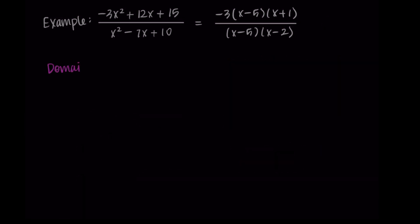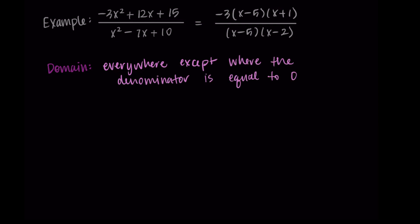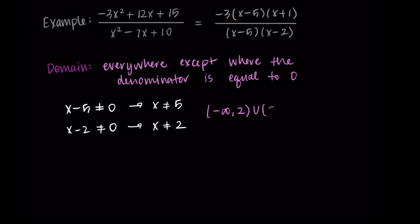Lastly, we do the domain — everywhere except where the denominator is equal to 0, which are the holes and the vertical asymptotes. Looking at the terms x minus 5 and x minus 2 in the denominator, we need x is not equal to 5 and x is not equal to 2. Written as an interval, this is negative infinity to 2, union 2 to 5, union 5 to infinity. And that is our domain.